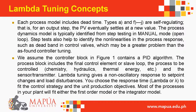Each process model includes dead time. Types A and F through J are self-regulating — for an output step, the PV eventually settles at a new value. The process dynamics model is typically identified from step testing in manual mode. Step tests also help identify nonlinearities such as dead band in control valves, which may be a greater problem than the controller tuning itself.